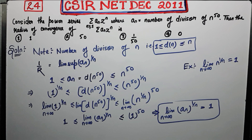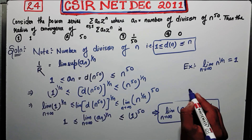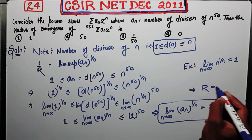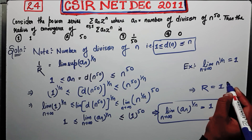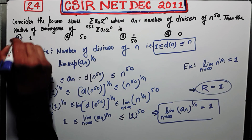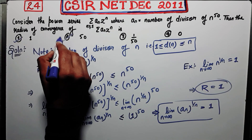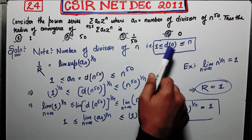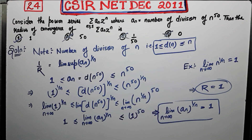From this we get the radius of convergence R = 1. Therefore the first option is correct and all other options are incorrect.